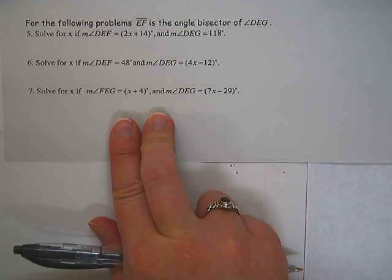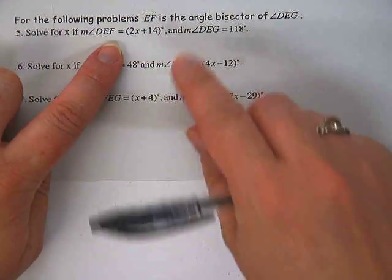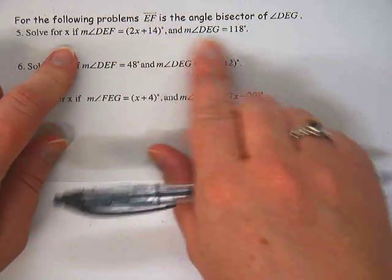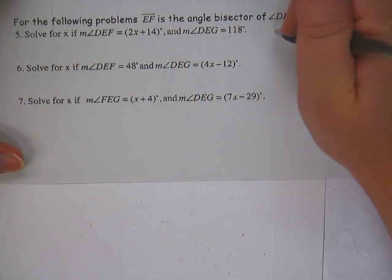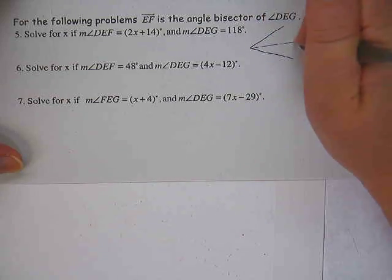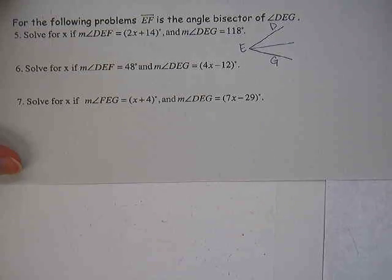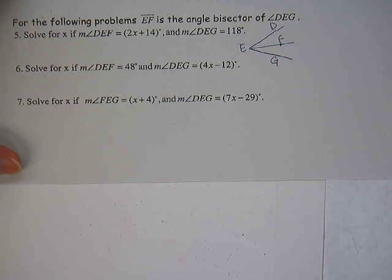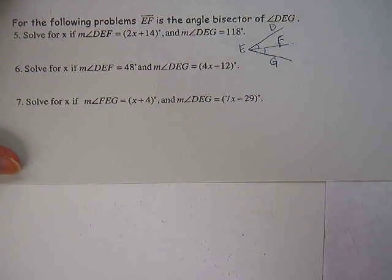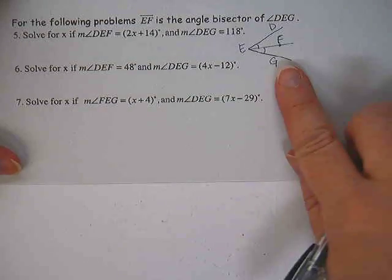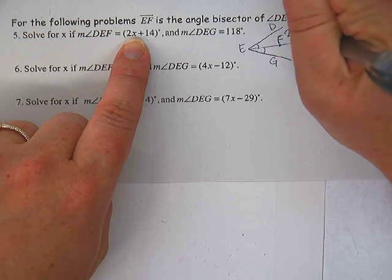Okay, let's look at the problems on the other side. You should have already done one through four. Let's start at problem five. Solve for X if the measure of angle DEF and the measure of angle DEG are these numbers. Okay, for the following problems, EF is the angle bisector of angle DEG. So again, I always draw a picture. So we have angle DEG and EF is the bisector.